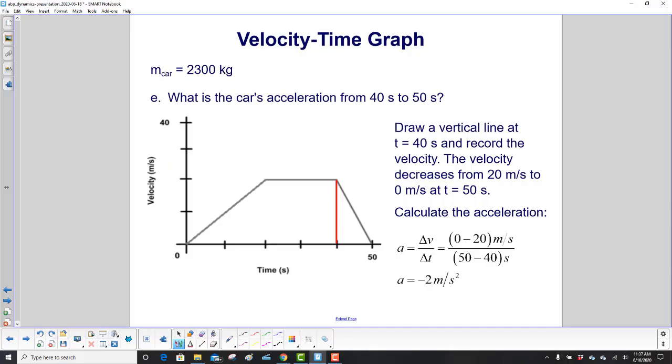What is the car's acceleration from 40 seconds to 50 seconds? Let's draw a vertical line at 40 seconds and record the velocity. The velocity starts at 20 meters per second and finishes at zero. So we do our calculation, Δv/Δt.